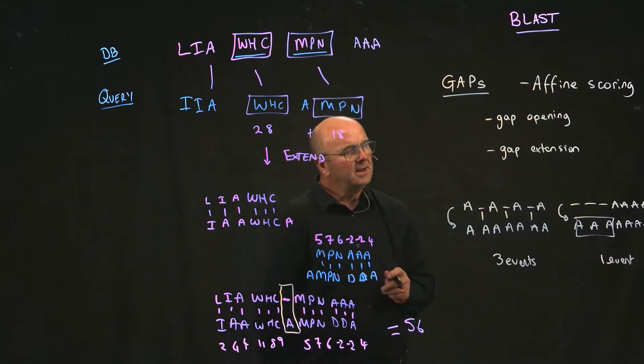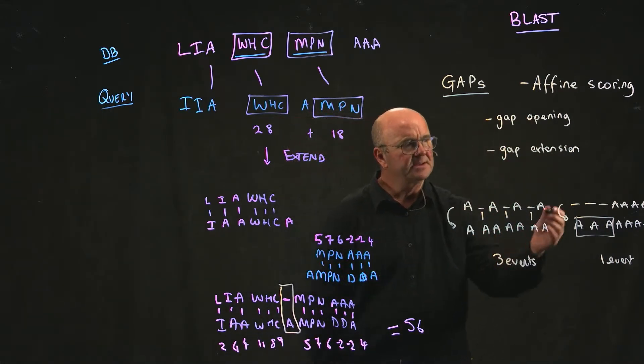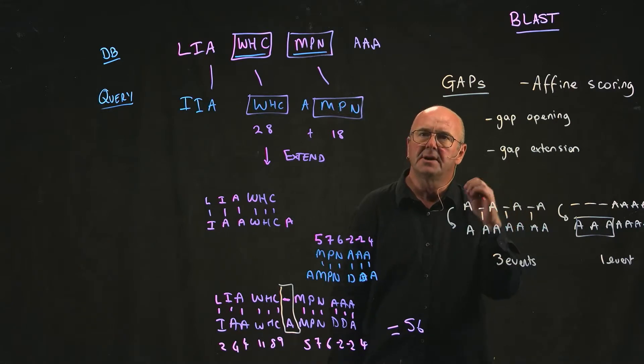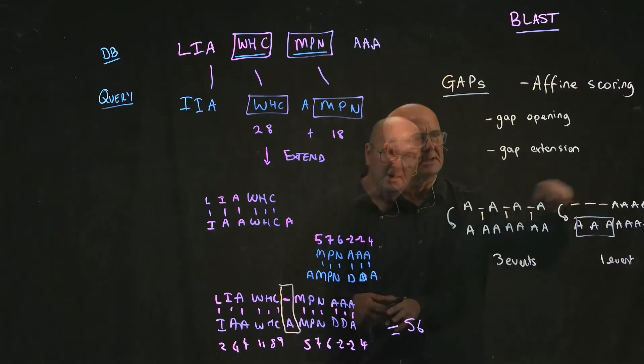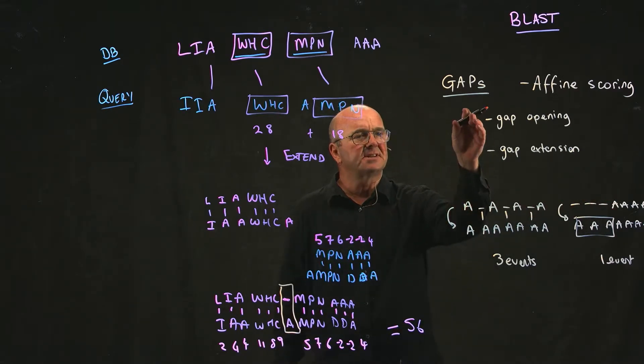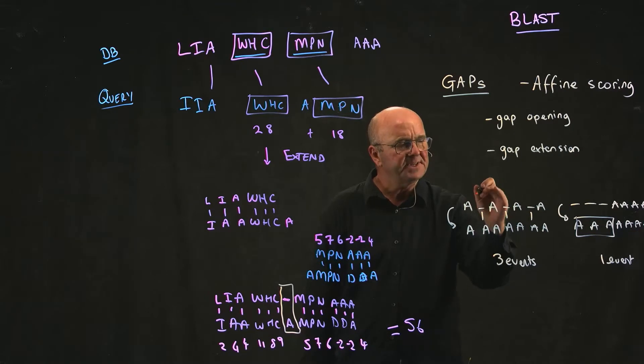And so the general expectation is that if we're going to have gaps we're going to have several gaps closer to each other than we are interspersed like this. So by introducing two different penalties we can say every time you want to insert a gap there's a big penalty.